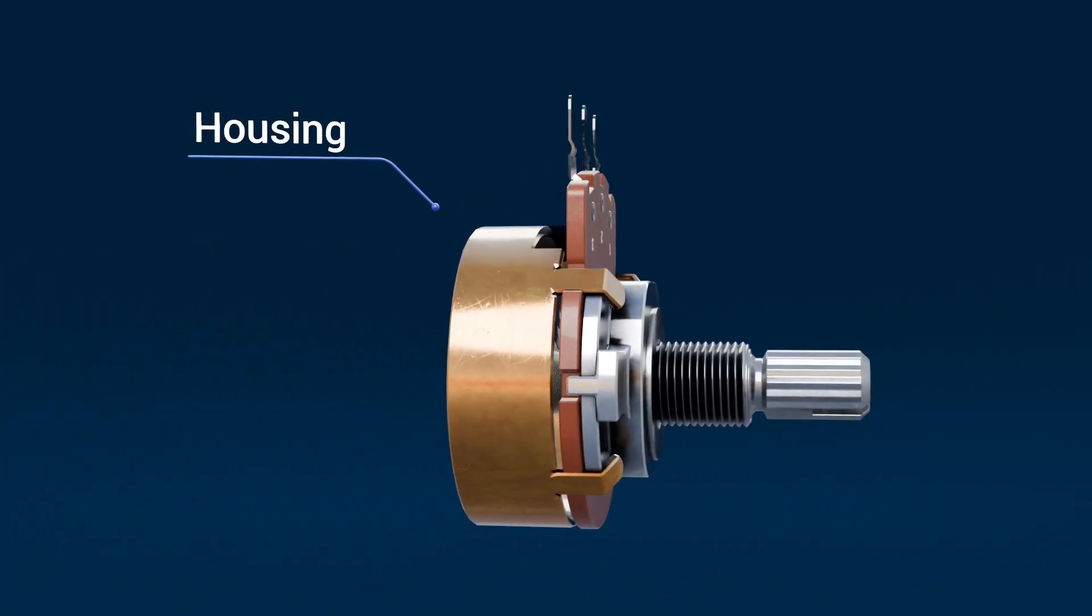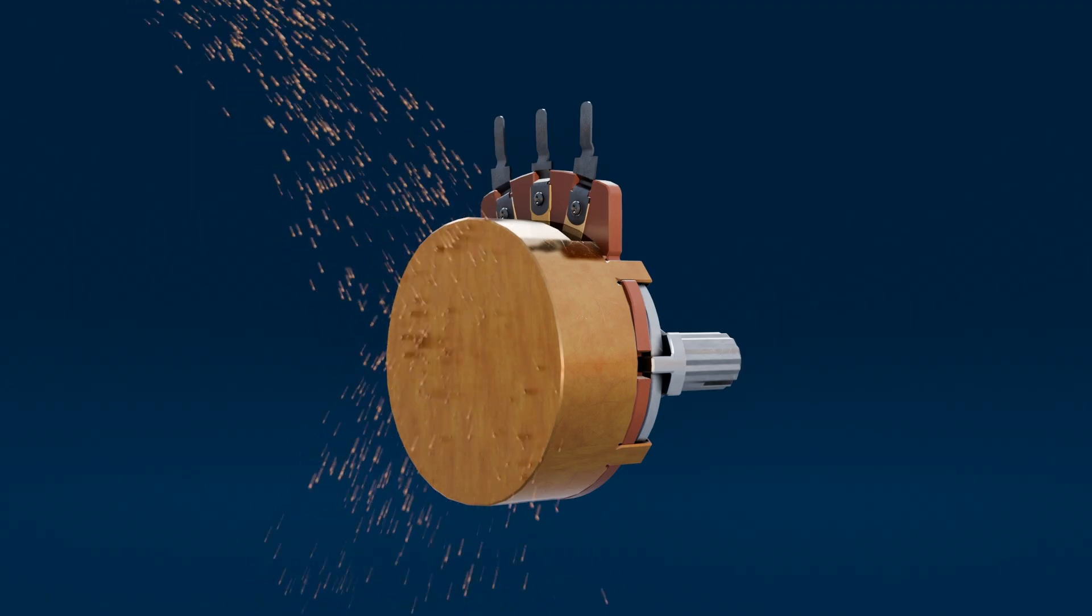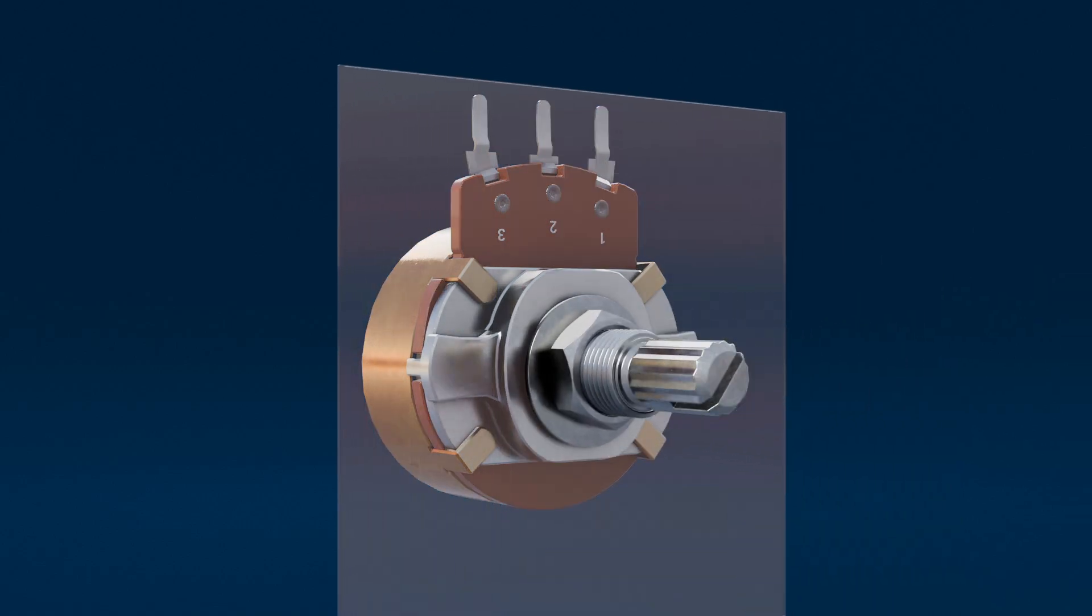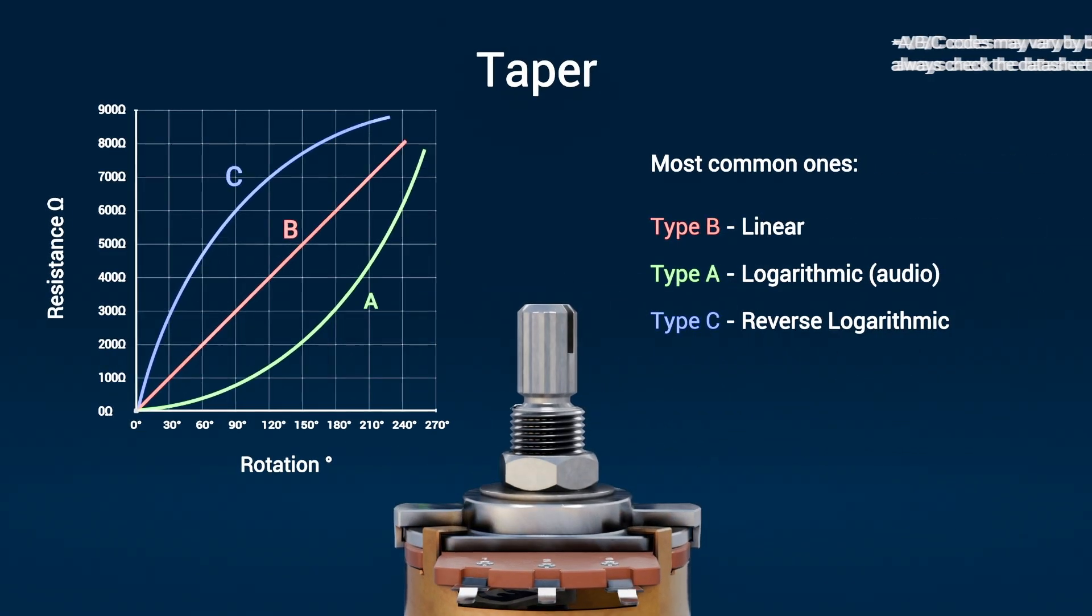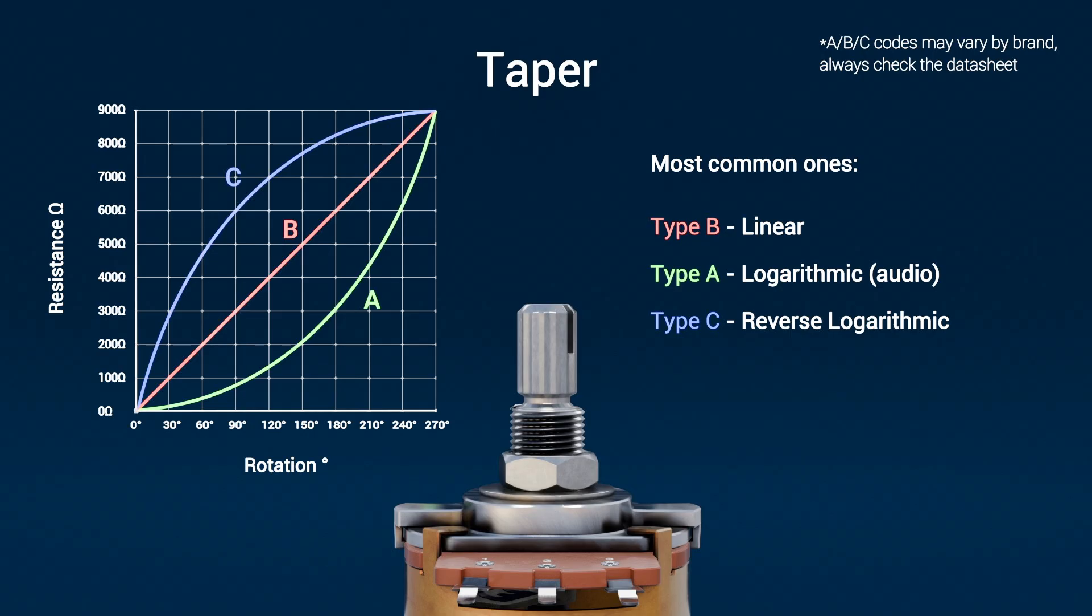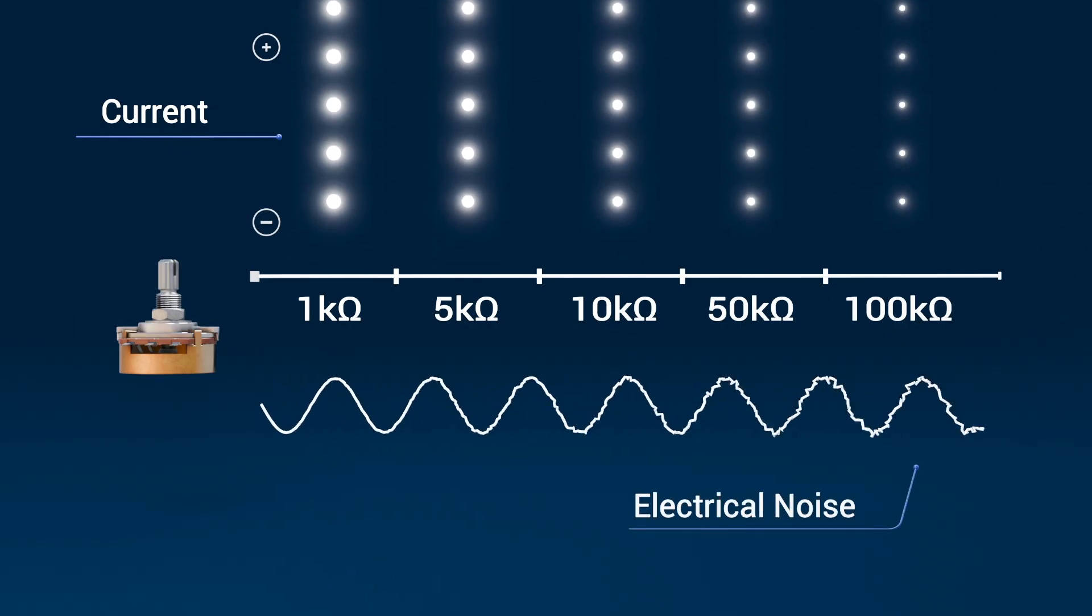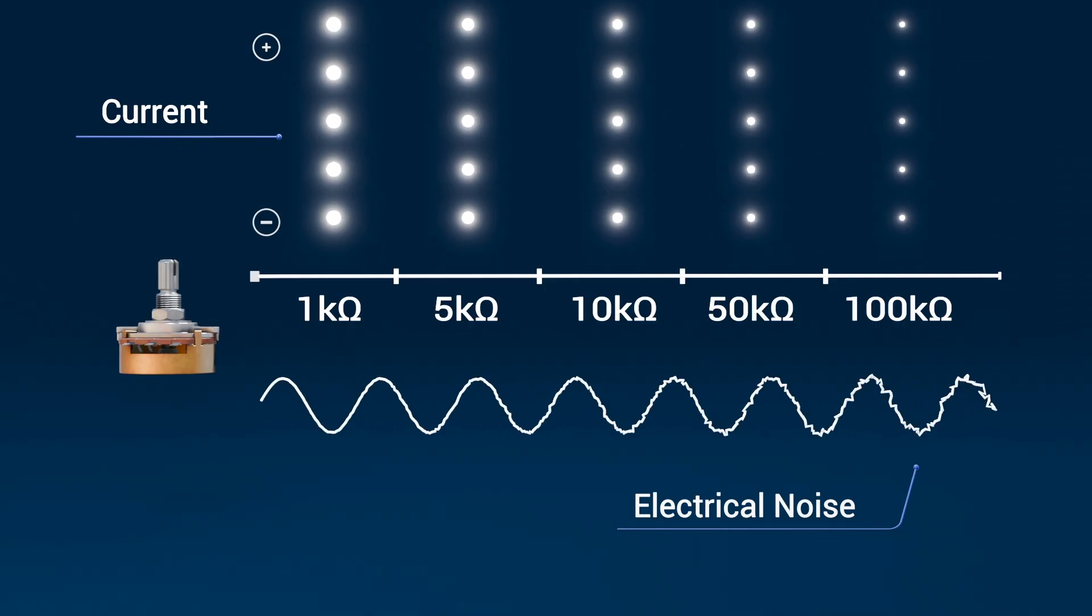All of this is held together by the housing and the bushing. The housing protects the resistive element and wiper from dust and mechanical damage. The threaded bushing at the front lets you mount the potentiometer onto a panel or enclosure using a nut and washer. And finally, there's the taper. This isn't a separate part you can see, but rather how the resistance changes as the wiper moves. A linear taper changes resistance evenly across the whole movement, while an audio or logarithmic taper changes more slowly at one end and more rapidly at the other, ideal for volume control because it matches how our ears perceive loudness. Different applications call for different tapers, so it's always worth checking the datasheet. Most potentiometers come in common values. Lower values draw more current, while very high values can introduce electrical noise. Choosing the right value depends on the circuit's current limits and the sensitivity you want.